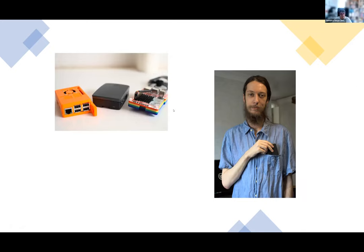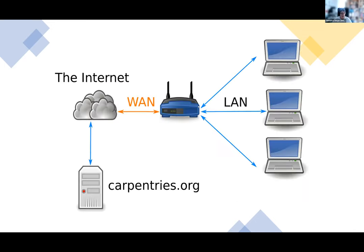Usually our setup has learners connecting to the internet via an access point — for example, Eduroam at universities — which connects them to the local area network, and the access point connects to the internet on the other side. On the internet is the Carpentries server serving web pages, and links to things like GitHub that serve our lesson material.